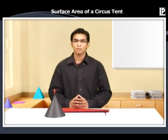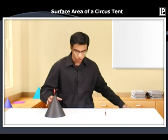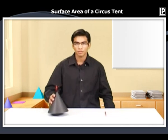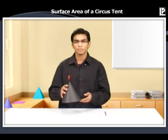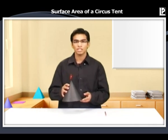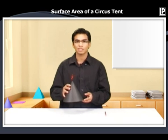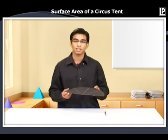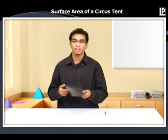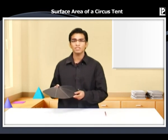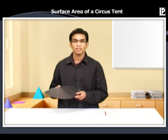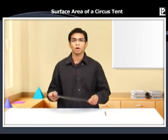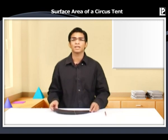Now let's take the second portion — the cone. Let's open this cone to see how it looks. Once done, this is how it looks. We've got a sector of a circle here. This means that the curved surface area of a cone is the same as the area of the sector formed by opening it.